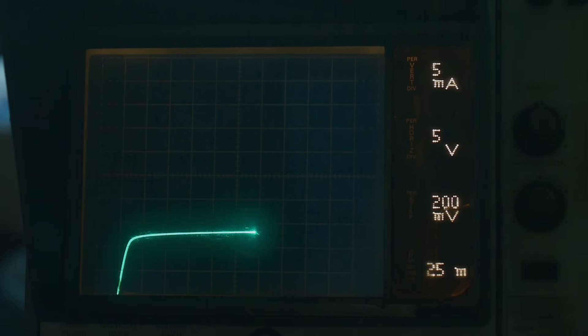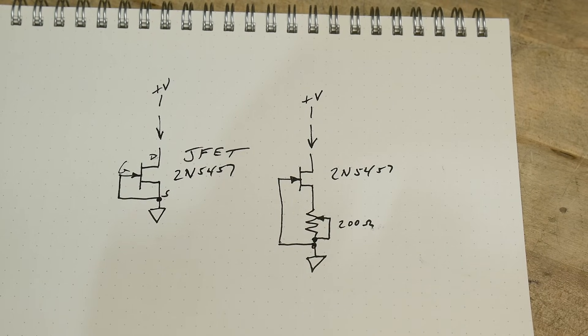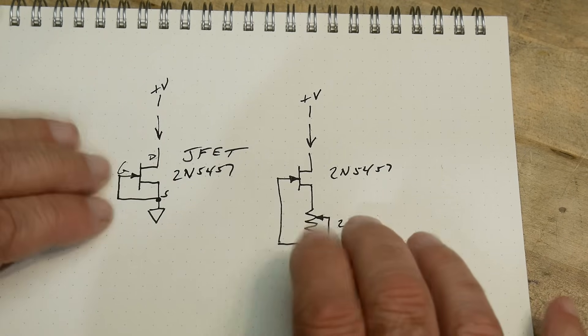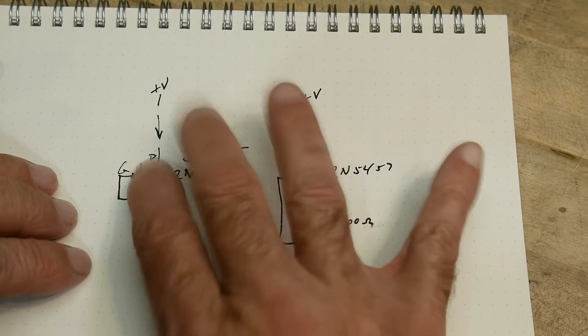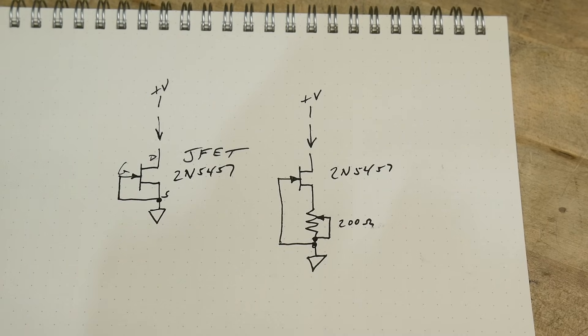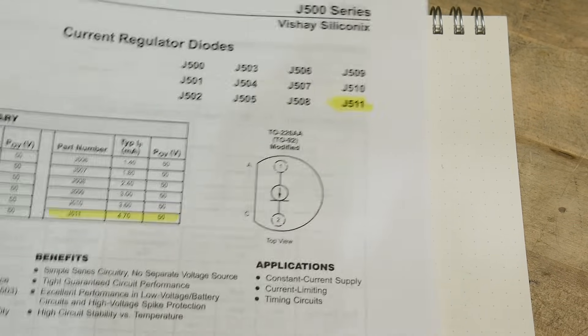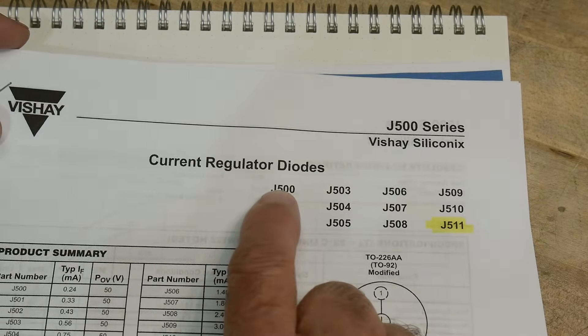Well there you go, you can build current things like this. I actually showed this once before in a Zener diode tester. I think I used this circuit to adjust a constant current thing. But the chip of the day was a J511, a current regulator diode.